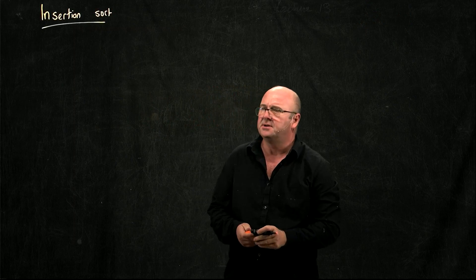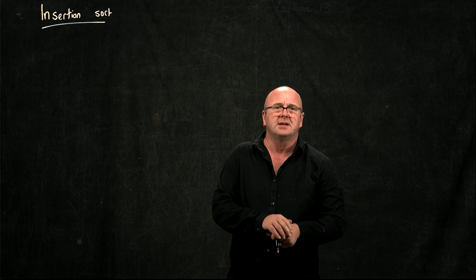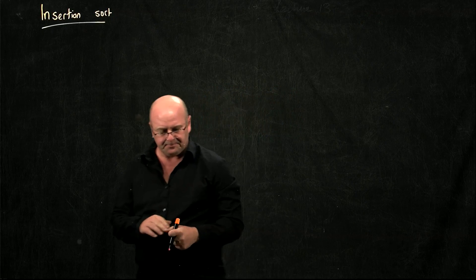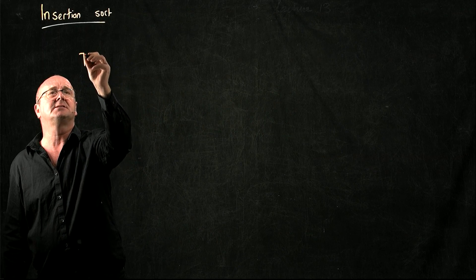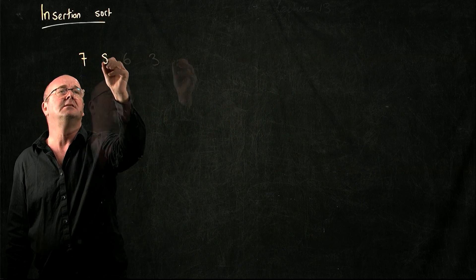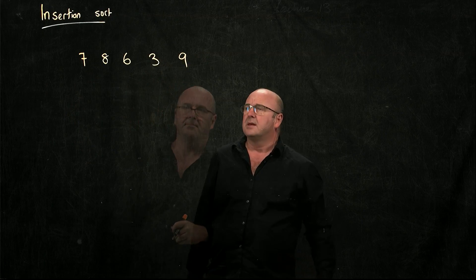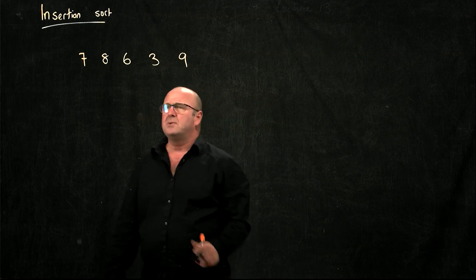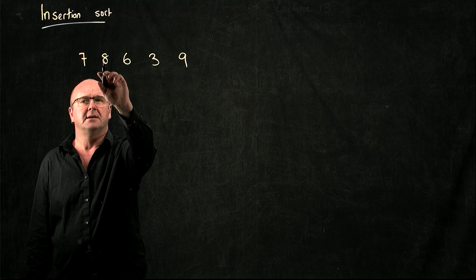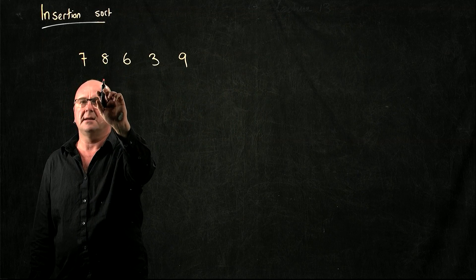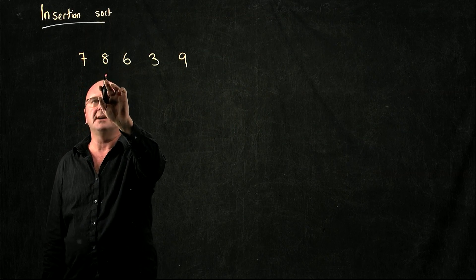The insertion sort is a little bit like the selection sort. We have our list of elements, and we take an element out. We ignore the first element, we take out the second element, the 8.